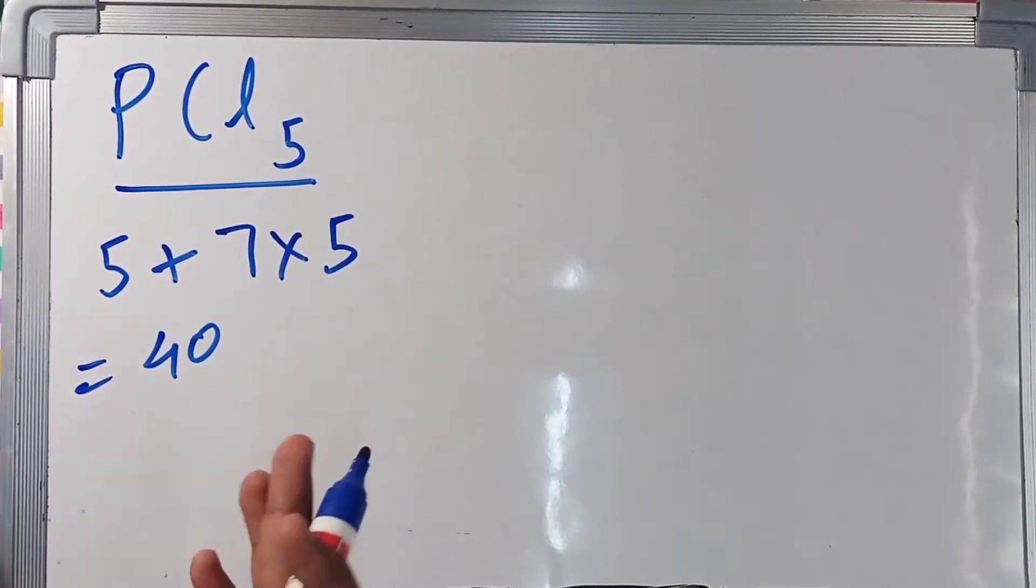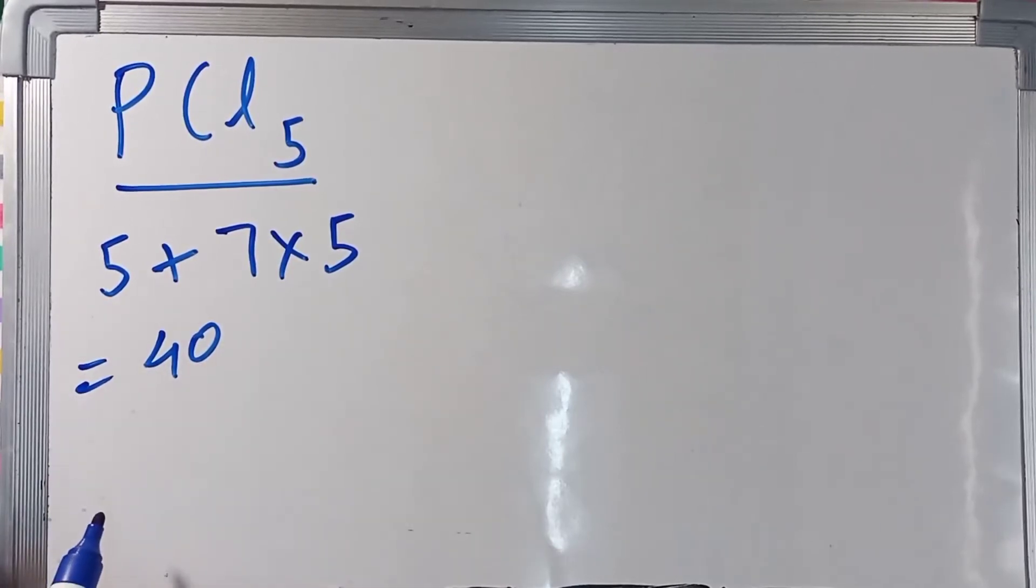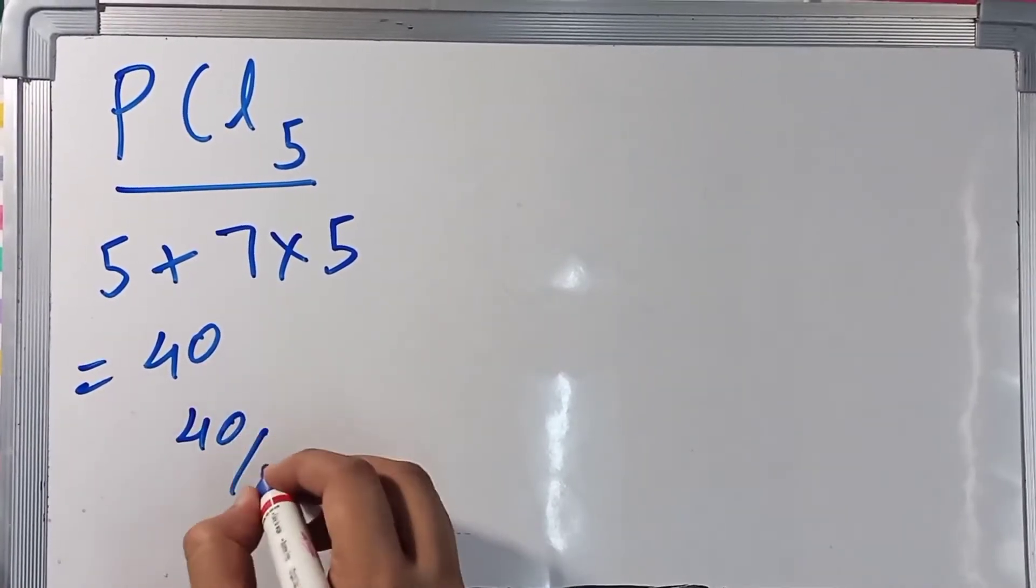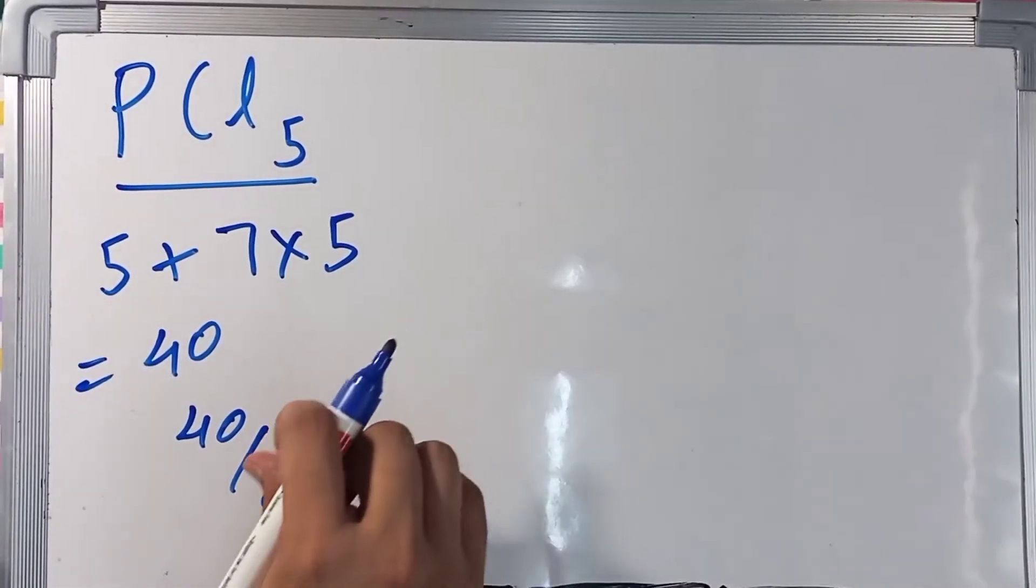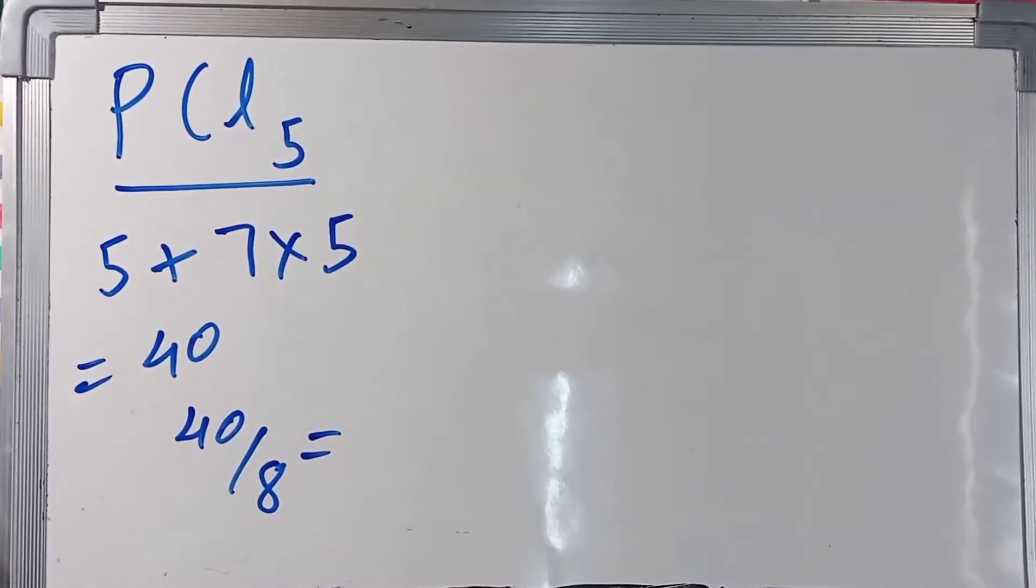If it would have been 8, 6, 4, or 2, then we would have divided it by 8. But since 40 is a greater number than 8, we are going to divide 40 by 8.